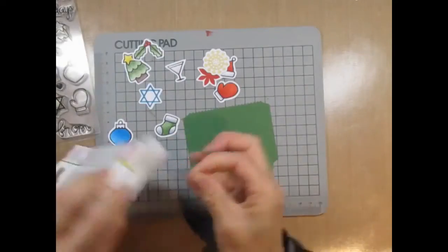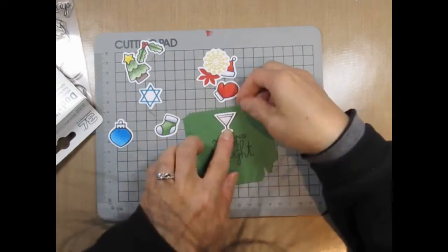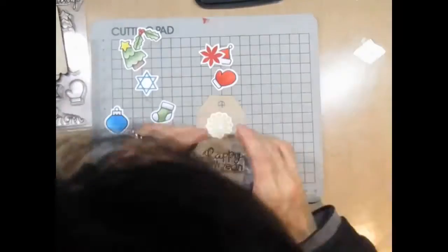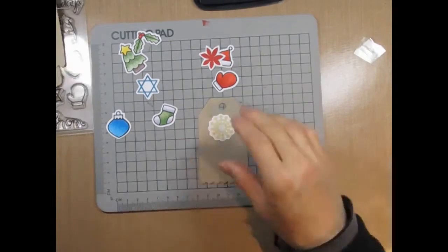So now that the images are coloured, I can adhere them to the shopping bag die and all the tags. I've selected different sentiments for each tag.